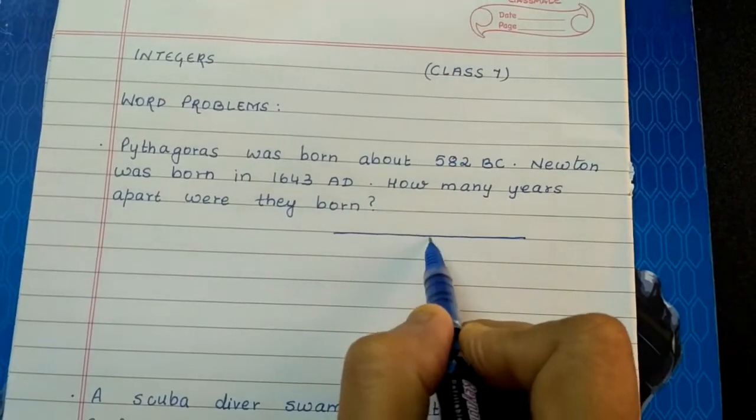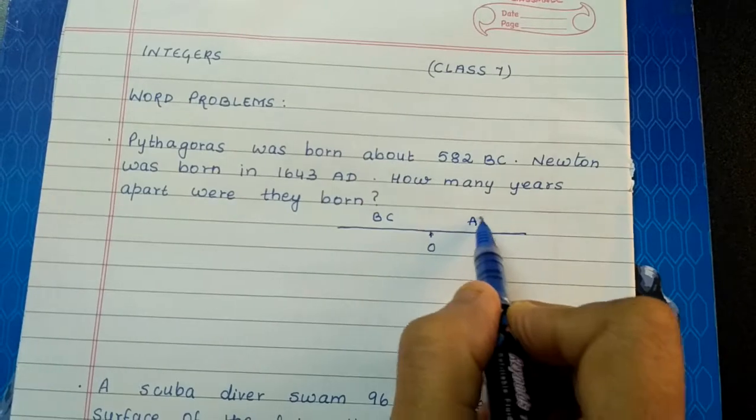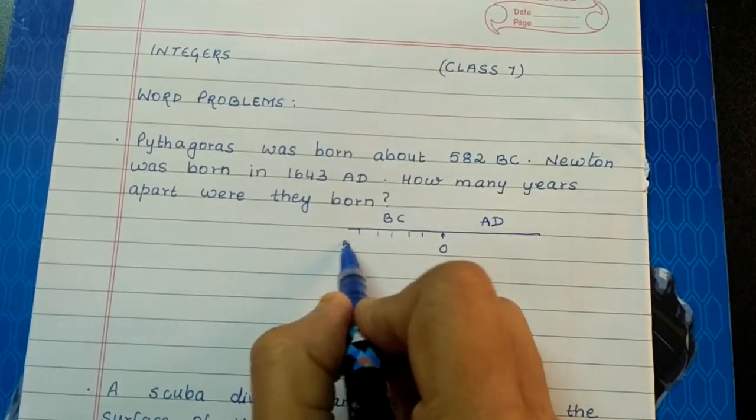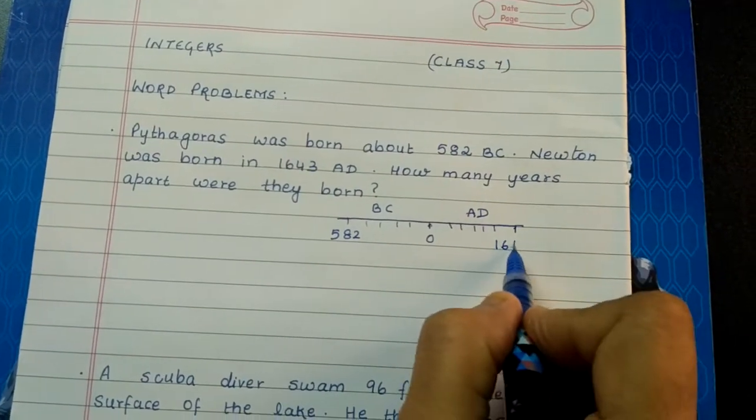If you draw a number line, this is before Christ and this is Anno Domini. Here we have to write the numbers backwards. So 582 will be here and 1, 2, 3... So 1643 will be here.